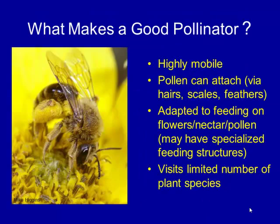So what makes a good pollinator? Understanding this will help you in selecting plants for your garden. We want something that's highly mobile, because it has to be able to move from one plant to another. It has to have something on it that pollen can attach to — hairs, feathers, scales. In the case of bees, they actually have structures where pollen collects, sometimes called baskets, sometimes on the legs, sometimes on part of the abdomen. It depends on the species of bee.